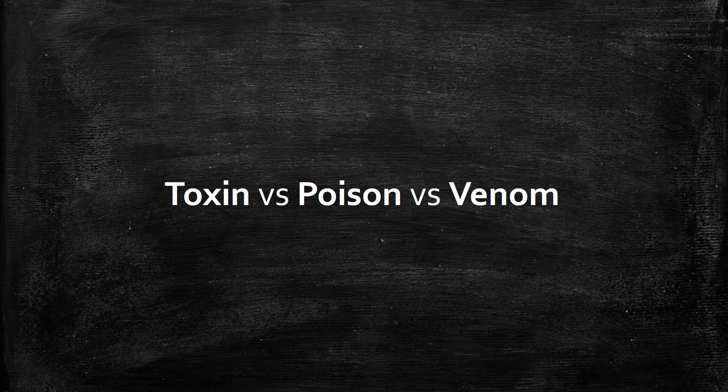Something to address: the difference between toxin, poison, and venom. Technically, a toxin is naturally formed, poison is absorbed — such as being ingested, inhaled, or touched — and venom is injected. That said, these are all used pretty interchangeably. I could do a whole other video on how it's linguistically wrong and how there's lexical gaps and no one cares. Use whatever you want.